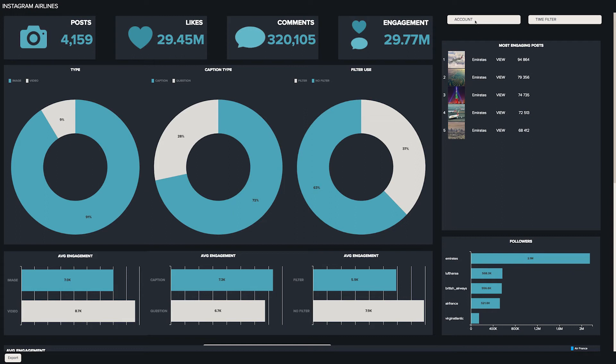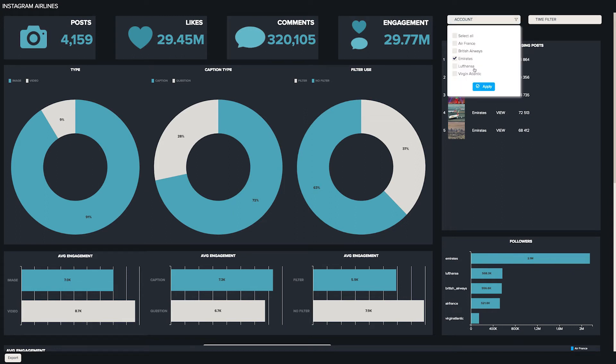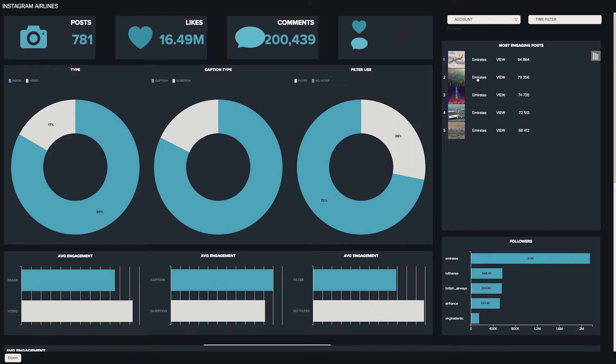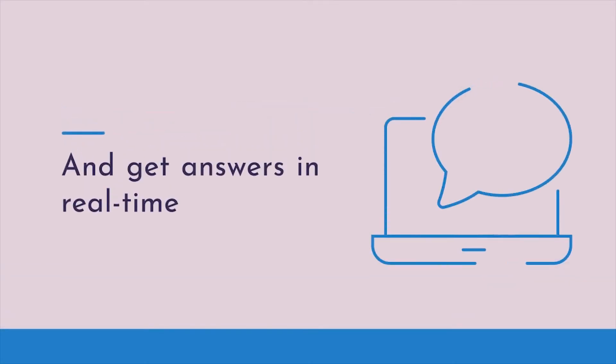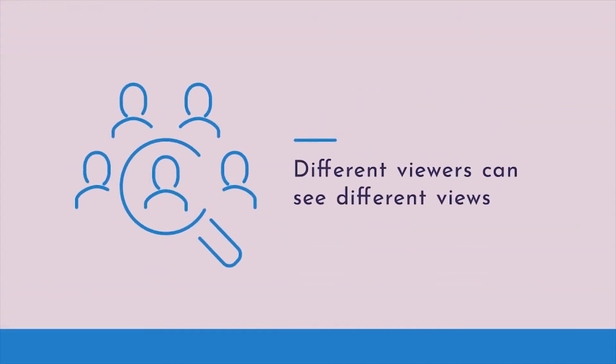Another big differentiator for BI tools is the interactivity options available for your published dashboards, allowing you to filter the data, drill down into it, as well as things like changing the metrics and dimensions on the fly. Interactivity is really useful because it allows your dashboard viewer to ask questions of the data and get an answer back in real time, rather than having a static report containing just a single view. If you're publishing to teams, different members may want to see different views of the data, so interactivity makes this a lot easier.